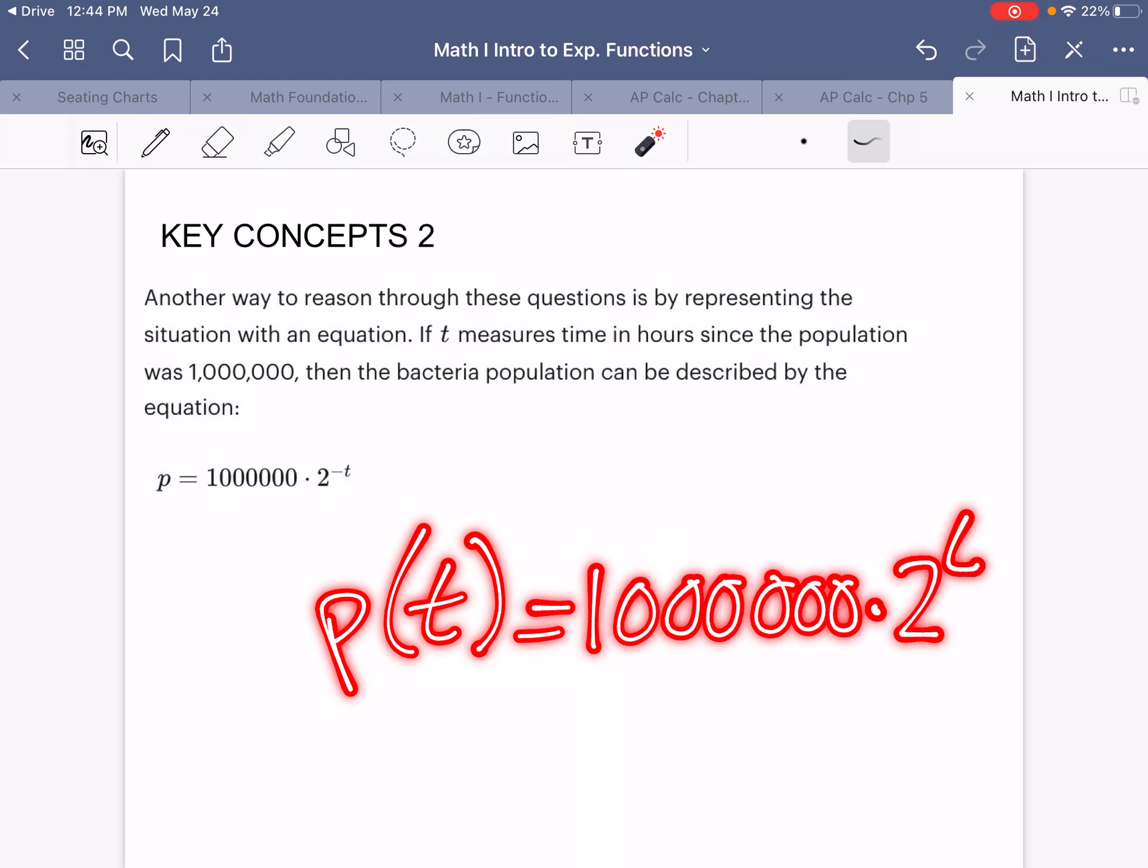But anyway, the point is, negative exponents are a way that you can show previous times from when you started. So this one right here, it's 1,000,000 when T is 0, so 5 hours earlier, T would be negative 5. And here's a way to calculate the problem.